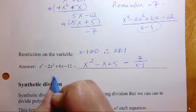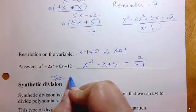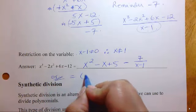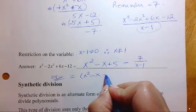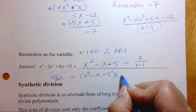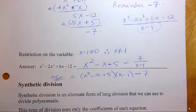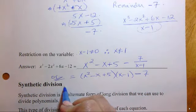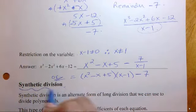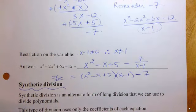You could also write it where you have your quotient, so your answer, times your divisor, and you add on your remainder. So this synthetic division, I'm going to do this in the next video along with the remainder theorem. Thank you.